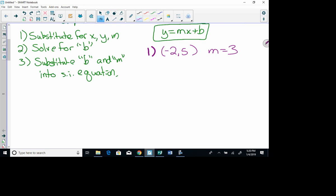All right, step one says substitute for x, y, and m. Well, this is x, and this is y. So I am going to put in 5 for y, 3 for m, negative 2 for x, and I do not know what b is. Now I'm just going to do number 2, solve for b. So I just have to work this out. 5 equals 3 times negative 2 is negative 6 plus b. I add 6 to each side, and I get 11 equals b.